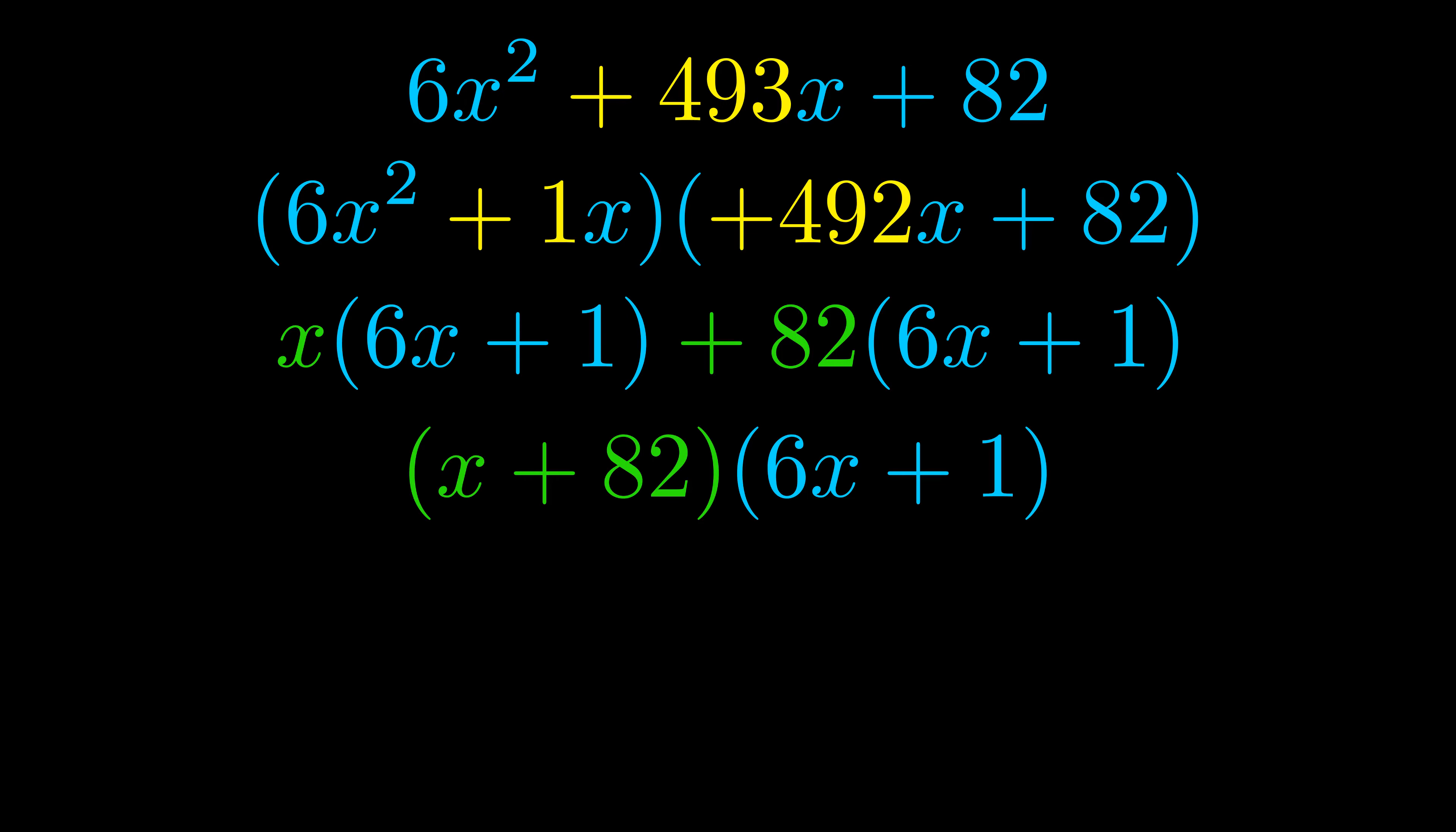The blue values are the same. Those blue values will become one of our factors and we will combine the two green values, the GCFs that we pulled out, to get the other one. And that is our fully factored equation.